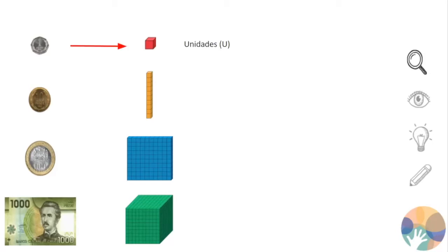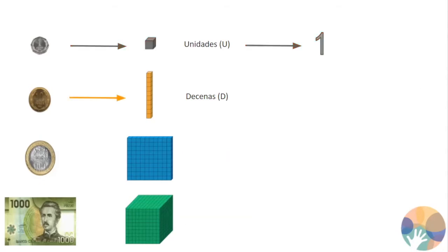Como habrás visto en años anteriores, la moneda de 1 peso, al igual que un cubito rojo, representa las cantidades de unidades. ¿Qué número se escribe 1? Las monedas de 10 pesos representan una decena, es decir, 10 unidades. ¿Qué número se escribe así? 10.